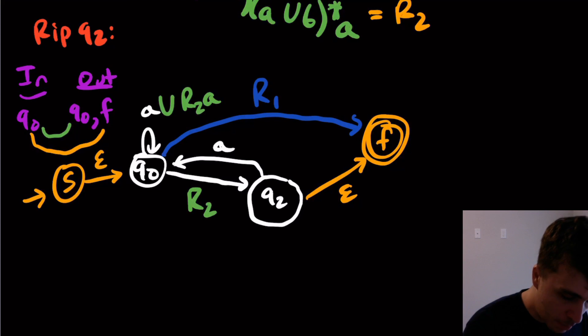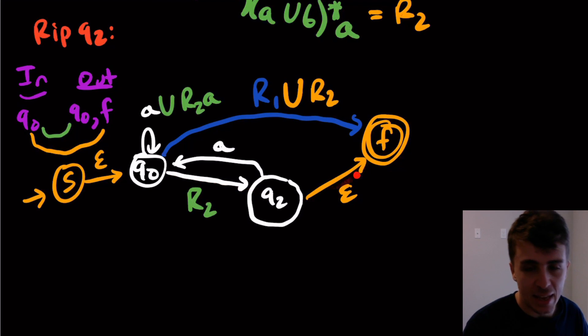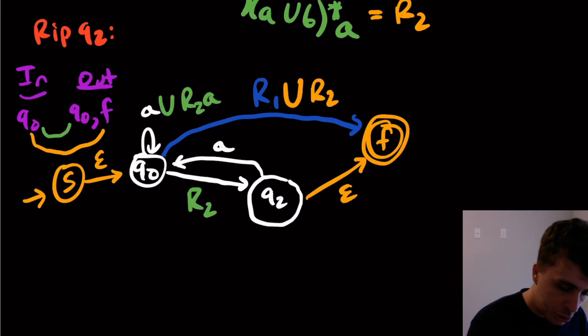So then now let's process the other pair, which is Q0 going to F. Well, then that's going to be R2 concatenated with epsilon. And we already have a transition already there. So I'm going to union it with R2. R2 concatenated with the empty string is just going to be R2, it doesn't change anything. So therefore, we can get rid of Q2 now.